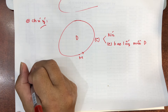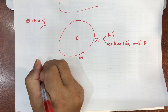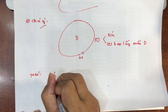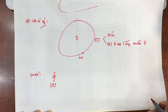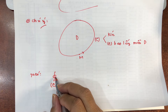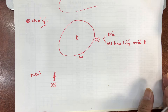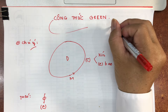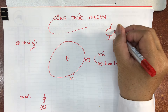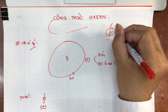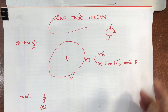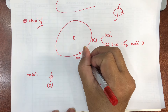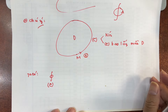Ta có tích phân trên đường cong kín C. Lưu ý là tích phân đường loại 2 trên đường cong kín thì người ta thêm dấu tròn ở giữa ký hiệu tích phân. Và đôi khi người ta để thêm chiều di chuyển, được định nghĩa là chiều dương là ngược chiều kim đồng hồ.